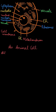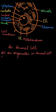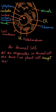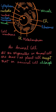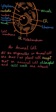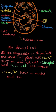In animal cell and plant cell, all the organelles are the same except that in the animal cell, chloroplast and cell wall are absent — these are only present in the plant cell. Vacuoles in the animal cell are more in number and small in size, whereas in the plant cell, the vacuole is single and large.